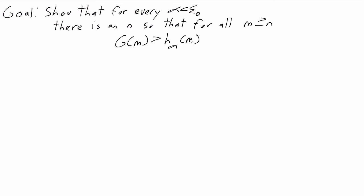Ultimately, what we want to prove is that for every alpha less than epsilon 0, the Goodstein function grows faster. There is an n so that for all m greater than or equal to n, h_alpha of m is less than g of m. So it might take the Goodstein function a little while to catch up when alpha is very large. But eventually, the Goodstein function overtakes all of these fast-growing functions.